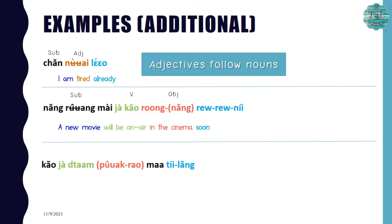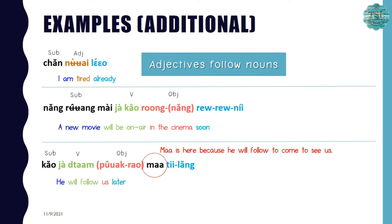The third sentence is an example for ทีหลัง: เขาจะตามพวกเรามาทีหลัง. เขา means 'he' as the subject, จะตาม means 'will follow' as the verb, and มา indicates coming toward us. If he were following to see someone else, you would say ตามไป; but in this case he is coming to meet us, so we say ตามมา. So this sentence means 'He will follow us later.'